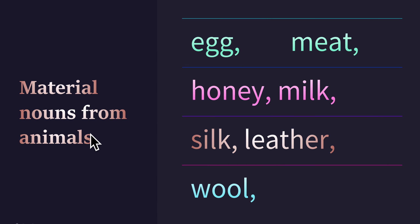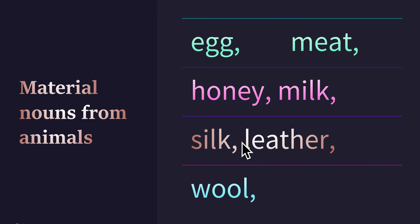Material nouns from animals: egg, meat, honey, milk, silk, leather, wool.